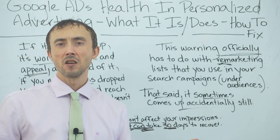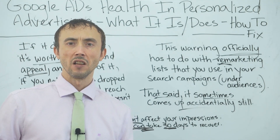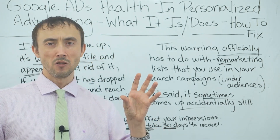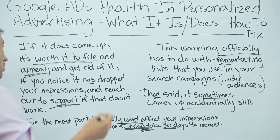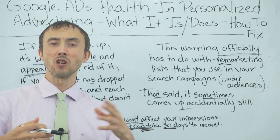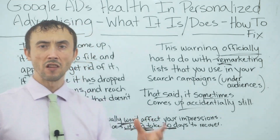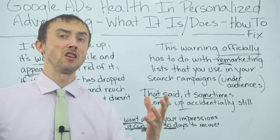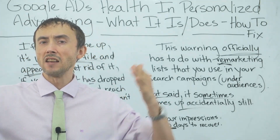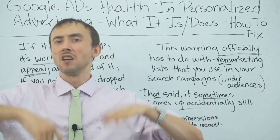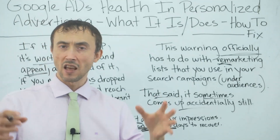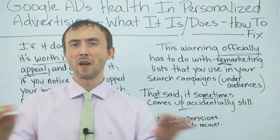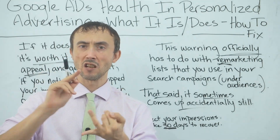In summary: if you don't notice anything different about your ads when this warning shows up, you can basically do nothing — it isn't affecting you and likely won't. If it does affect you, file an appeal, get it to go away, and then potentially jack your bids up temporarily to recover faster. Also, proactively getting rid of this warning — by deleting remarketing audiences and filing an appeal — might not be a bad idea before your peak season, just in case Google's changes ever make it affect you at an inconvenient time.